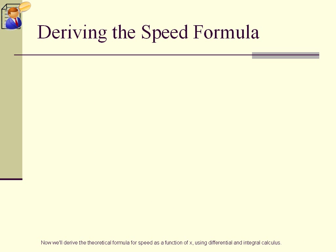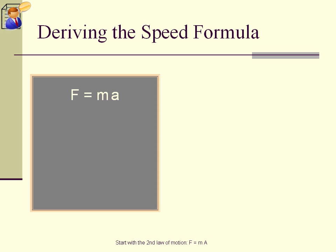Now we'll derive the theoretical formula for speed as a function of x, using differential and integral calculus. Start with the second law of motion, F equals MA. Multiply both sides of the equation by V, getting FV equals MAV. The left side of the equation FV is just the power P, which is assumed constant. So we get P equals MAV.